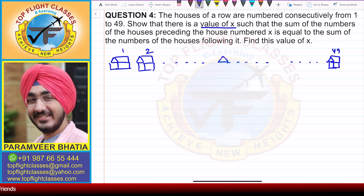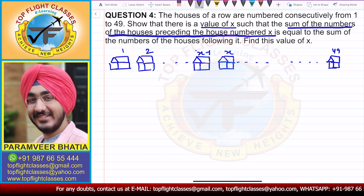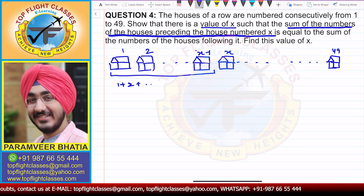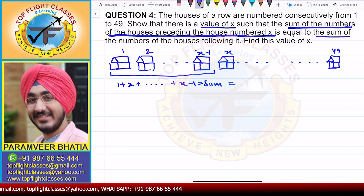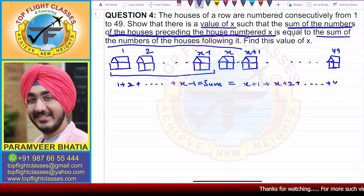We have a house number x. The sum of the numbers of the houses preceding house numbered x means house numbers 1 + 2 + ... + (x−1). This is equal to the sum of the numbers of the houses following it, which starts from x+1. So the following sum is x+1 + x+2 + ... + 49.